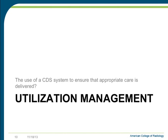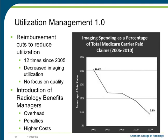Looking at utilization management, we can ask: has imaging thus far used a clinical decision support system to ensure that appropriate care is delivered? The answer is no. Radiology has been subject to utilization management in the form of reimbursement cuts, which have been cut 12 times since 2005, with direct impact on imaging utilization without any focus on quality or the value that radiology brings to the healthcare value chain. In addition, radiology benefits managers have been introduced, which introduce overhead, penalize users, and only add additional cost to the imaging cycle.